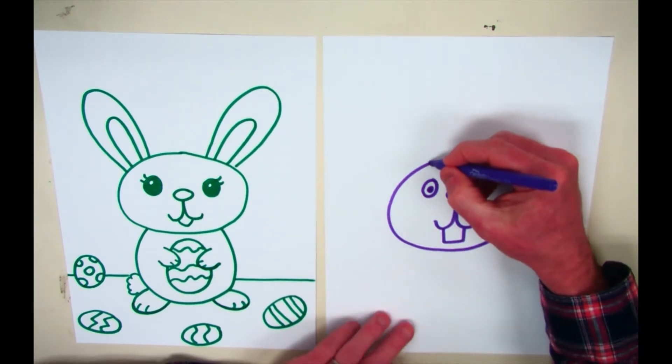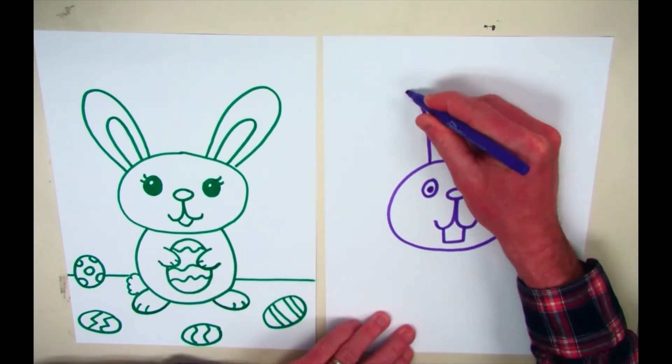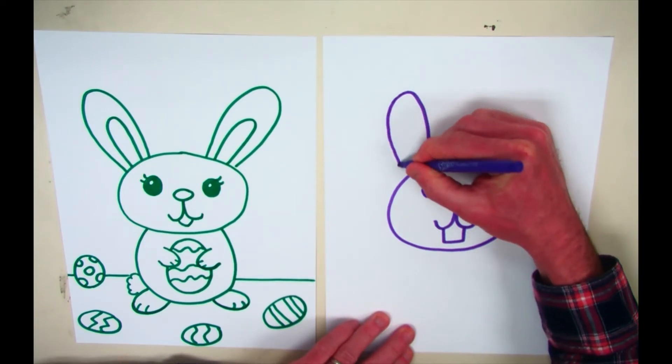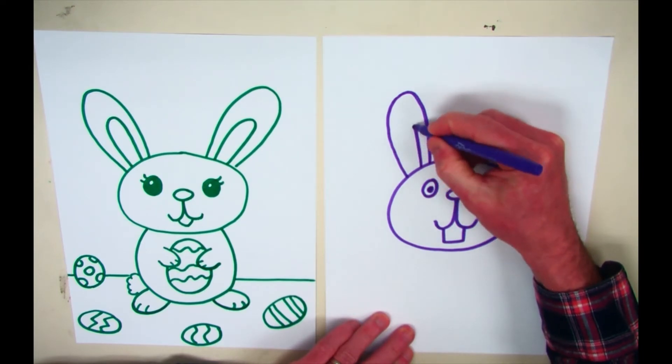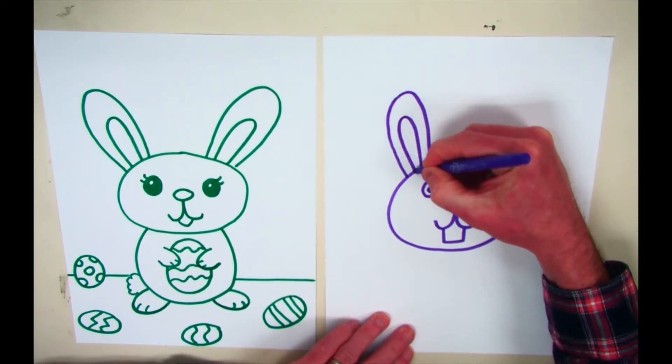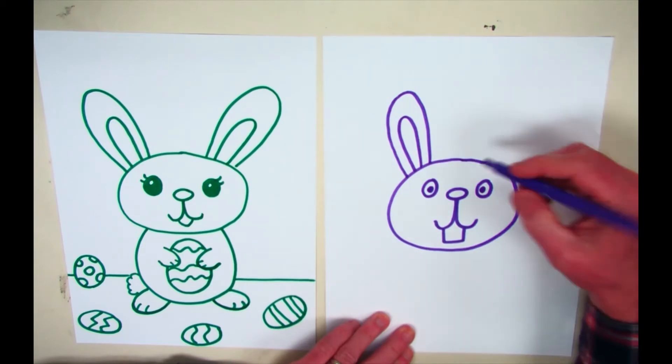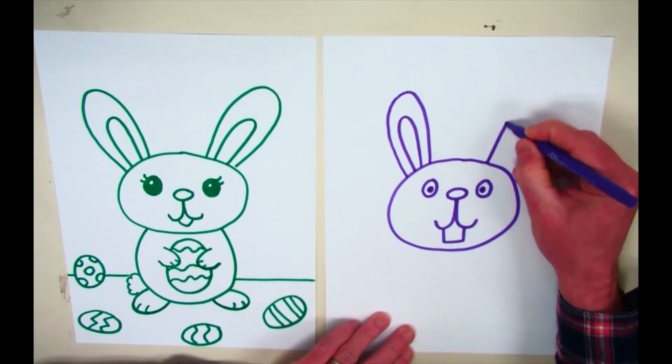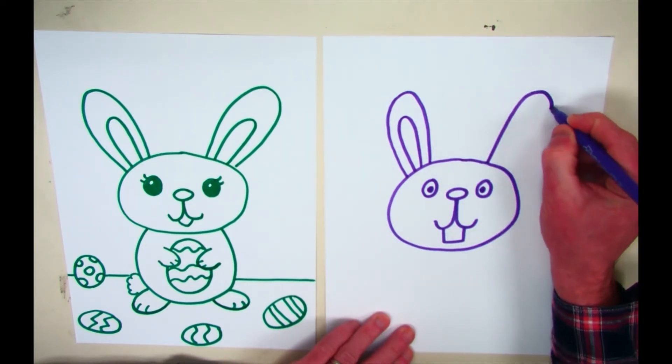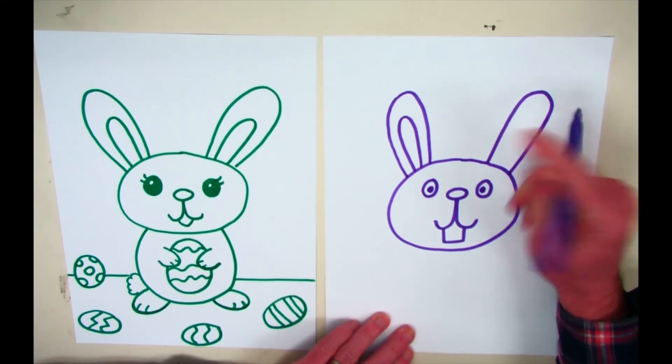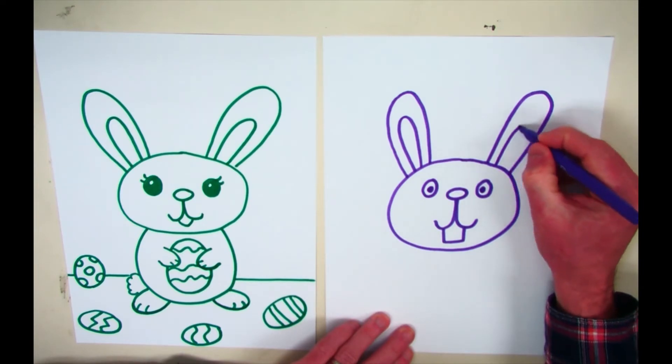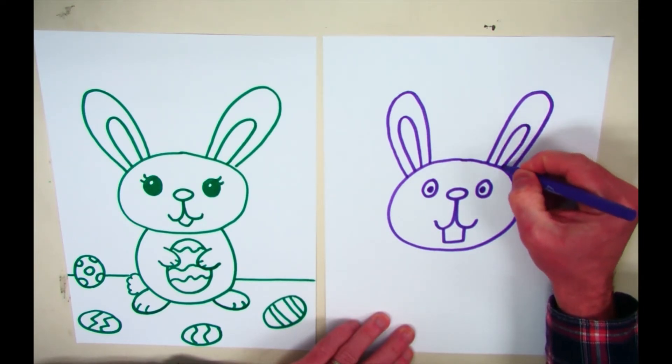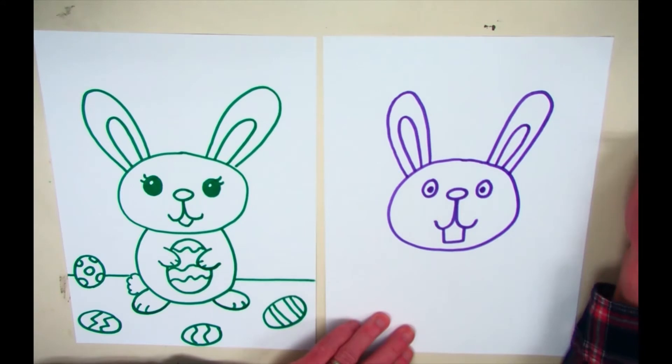Bunnies have big ears. This rabbit has a big ear like that. And then we'll put another line inside of it. And on the other side, we'll do the same thing. Try to make them about the same size, same height, same width, and then put a little one inside. Now, mine aren't perfect. Yours probably won't be perfect either. That's okay.